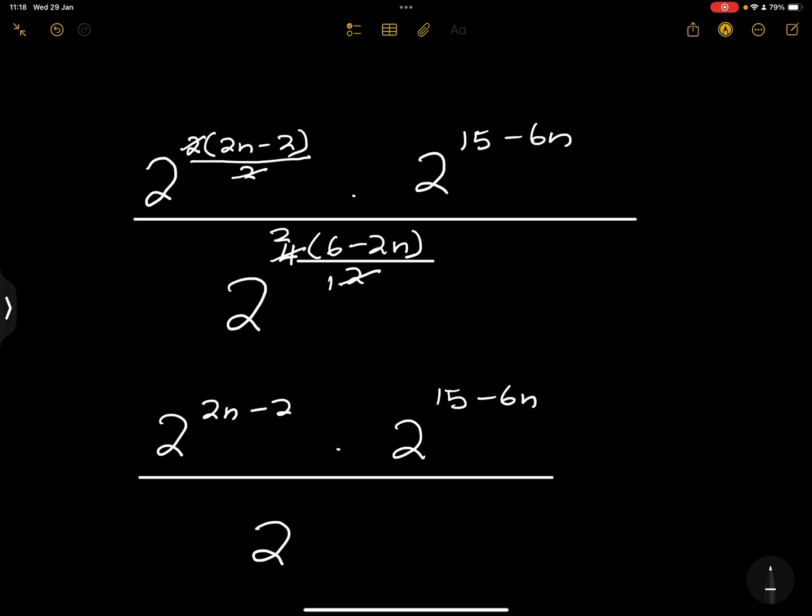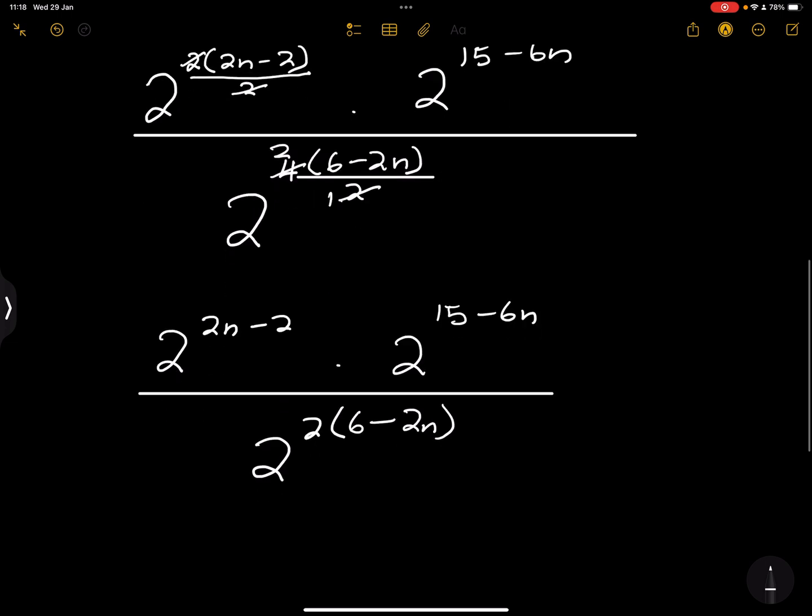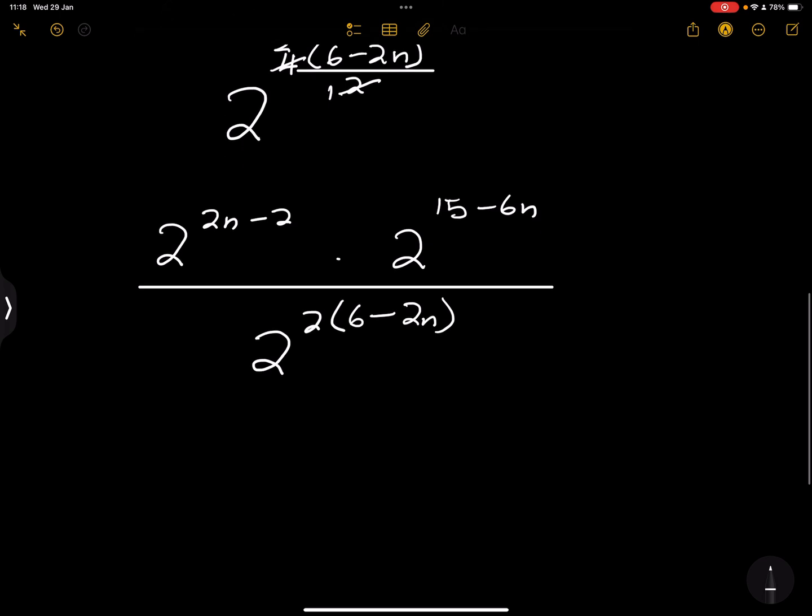Now remember, 2 goes into itself once and into 4 it goes twice. So this is the same as saying 2 to the power of 2 into 6 minus 2n. I hope that you are getting this, ladies and gents.